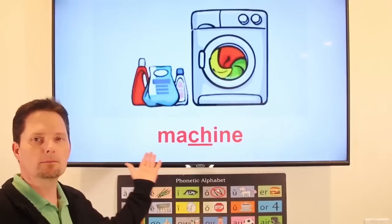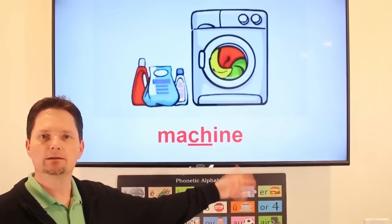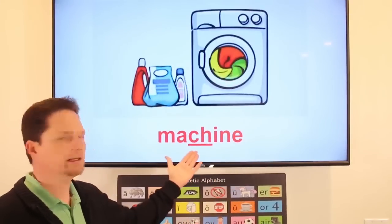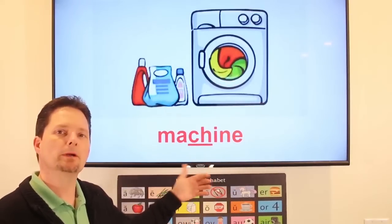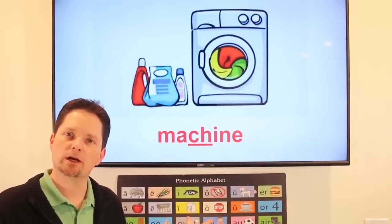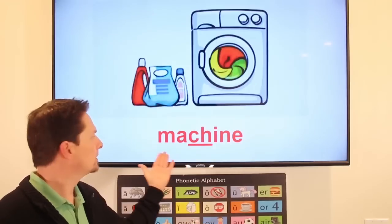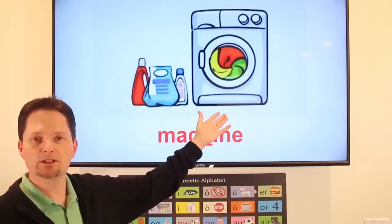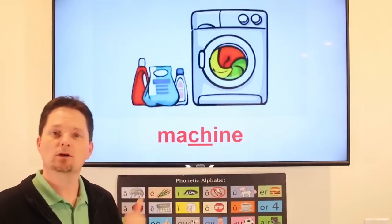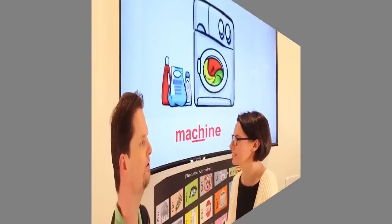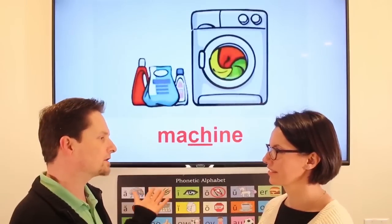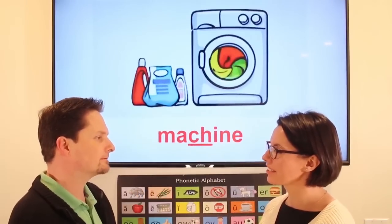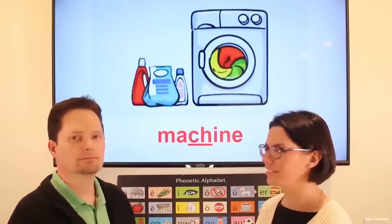Example: machine. C-H is soft — shh — because it comes from French. Machine. This is my washing machine. I put the clothes in the washing machine. Did you put the clothes in the washing machine? Yes, I put the clothes in the washing machine.